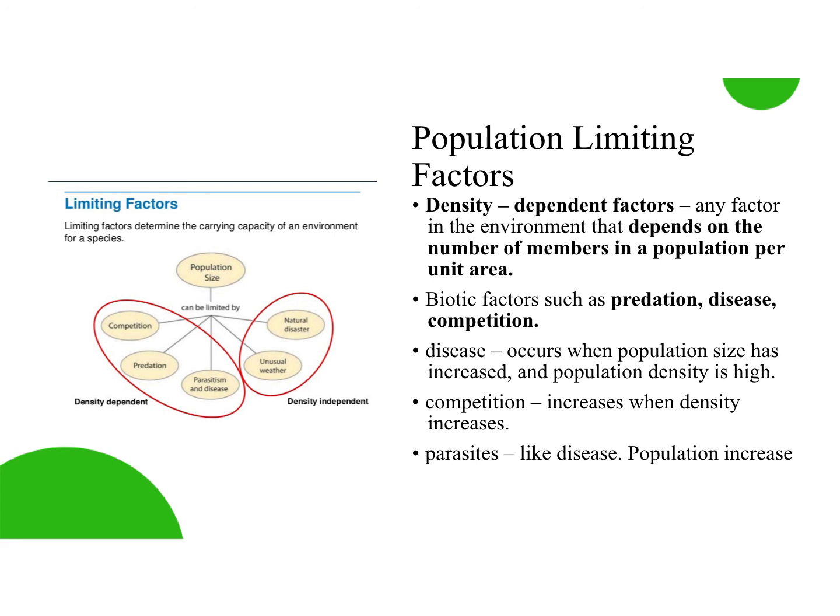Another example is competition. If you have a more densely populated area, there's going to be more competition — more than one species or organism competing for the same resource. Not everyone's going to win, so if you aren't getting the resources you need, you're going to die off, and that too limits the population. Parasites work similarly to disease: parasites can jump from host to host if the hosts are physically closer, so those help control the population as well.